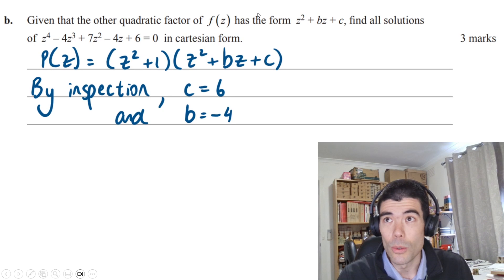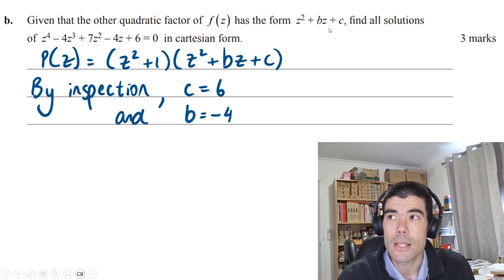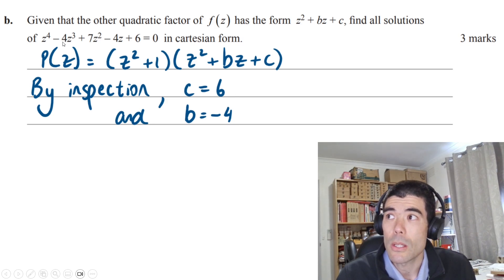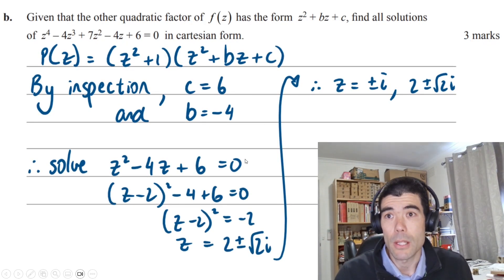For part b, it's asking to find all the solutions. We're told the second quadratic factor is z² + bz + c. Rather than doing a long division, just set it up in two brackets and we can pretty easily work out that c has to be 6. We're looking at 1 times c must give this constant of 6. We can work out that b has to be negative 4, because if we look at the cubic term, negative 4z³, where's that going to come from? It can only come from bz times z². There's no z in the first bracket. So therefore, b must be negative 4.